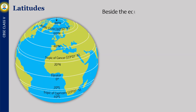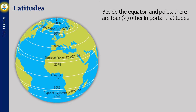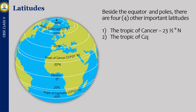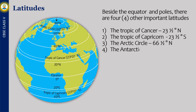Besides the equator and poles, there are four other important latitudes. The Tropic of Cancer is 23 and a half degrees north. The Tropic of Capricorn is 23 and a half degrees south. The Arctic Circle is 66 and a half degrees north. The Antarctic Circle is 66 and a half degrees south.